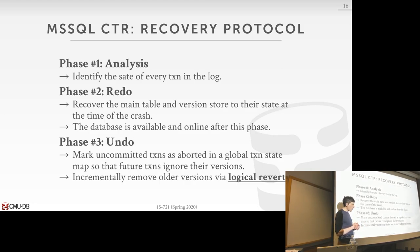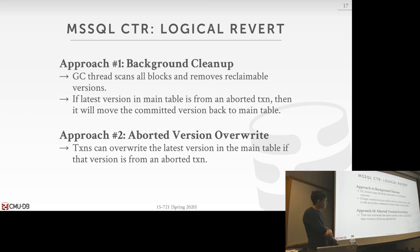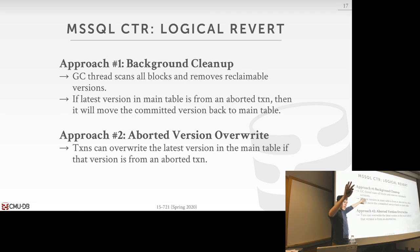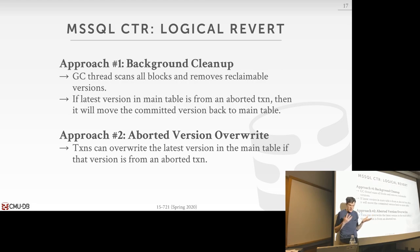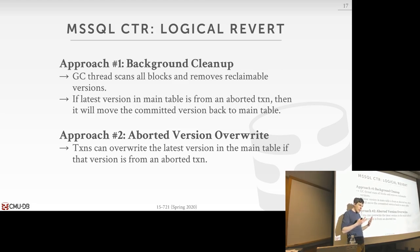They refer to the background cleanup as logical revert, which sounds like garbage collection. Separate threads scan through blocks, find aborted versions, and if the latest version of a tuple is in the version store, move it back into the main table — same as regular GC. One optimization: if a transaction recognizes the master version of a tuple in the main table is from an aborted transaction, instead of copying it out and making a new version in the time travel table, it just completely overwrites it.